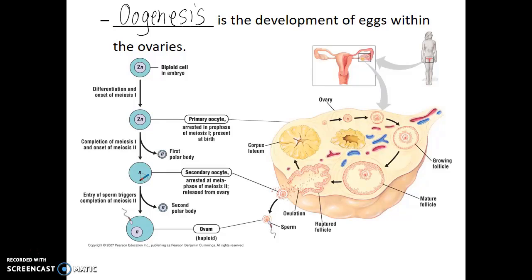So at the time of her birth, all of the primary oocytes that she will have for her entire life will be present. Primary oocytes are diploid cells that have been fated to undergo meiosis. In fact, they even start this process of meiosis, but they are arrested in prophase I of meiosis I.